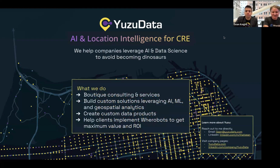What we do in practice is consulting and services around geospatial data. We build custom solutions leveraging AI, machine learning, and geospatial analytics for commercial real estate. We do custom data products — a lot of data is sold as raw ingredients; we try to get it close to an at-home meal kit where you can put it into the right place and get results right away. We also help clients implement Warebots and get maximum ROI when they don't have the skills or infrastructure in-house.